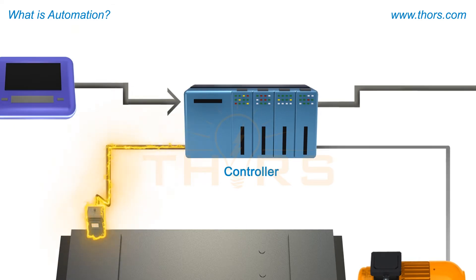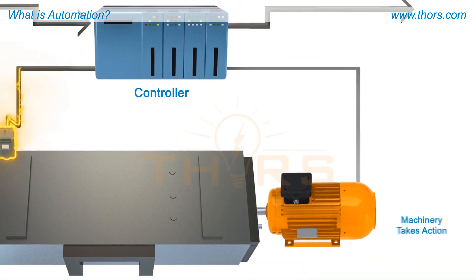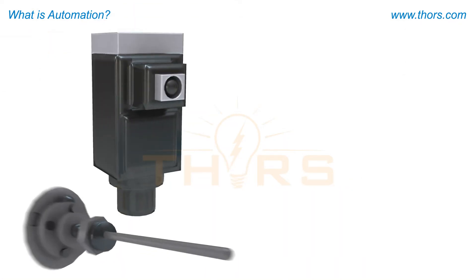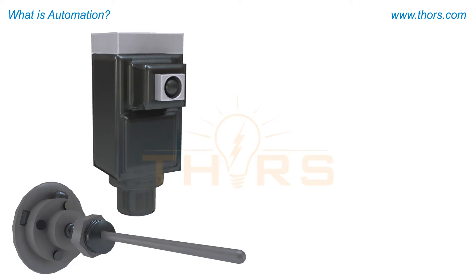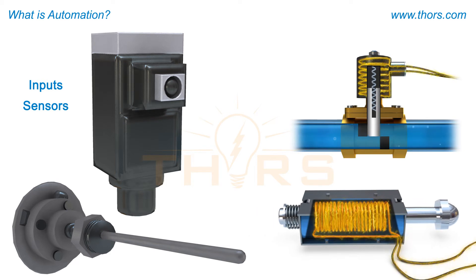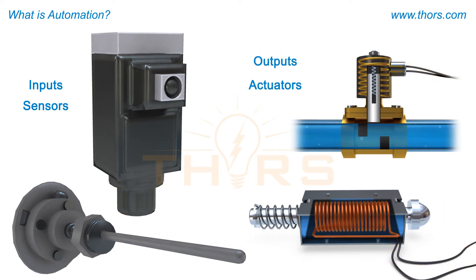Based on the state of the product or machinery, the controller contains logic that will decide what to do next and will command the machinery to take action. The devices that bring information to the controller are generically called inputs or sensors, and the devices that are commanded to take action from the controller are called outputs or actuators.